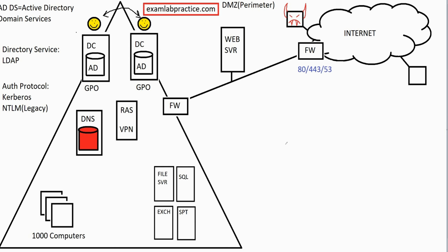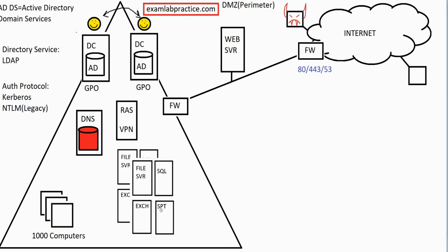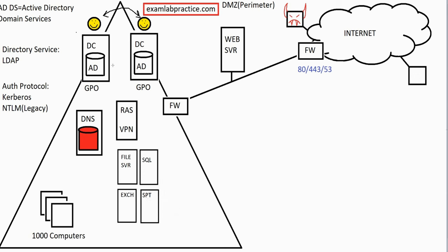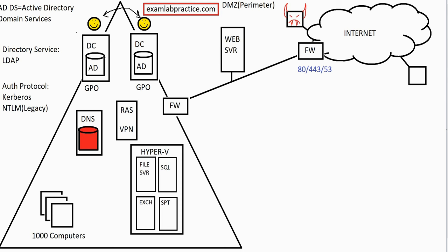VMware expanded on this idea. What they pushed the envelope on was: you don't necessarily need four different servers. If you wanted redundancy for four servers, you'd really need eight servers. But with virtualization, you can set up one hypervisor server and virtualize those other servers. In the Microsoft world, we call that Hyper-V — the hypervisor software. VMware was not the first ever to come up with this concept, but they were the biggest contributor to it.